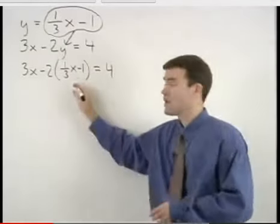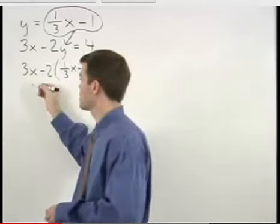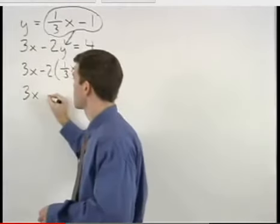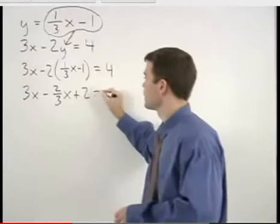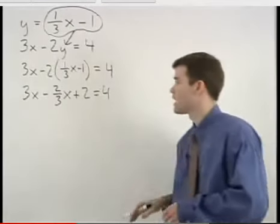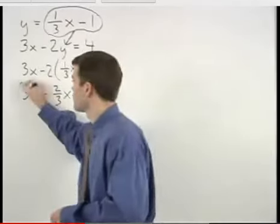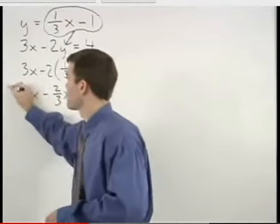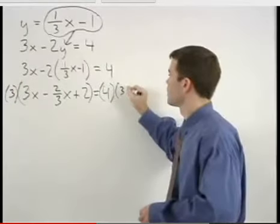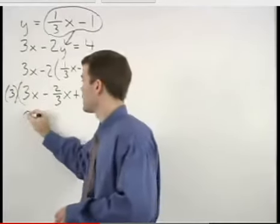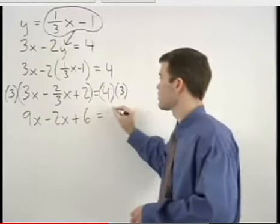Now we can solve for x by first distributing the negative 2 through the parentheses to get 3x minus 2/3x plus 2 equals 4. We need to get rid of the fraction by multiplying both sides of the equation by 3 to get 9x minus 2x plus 6 equals 12.